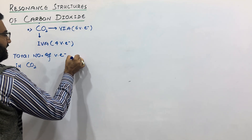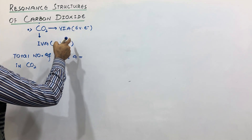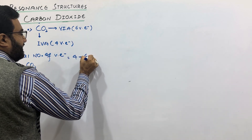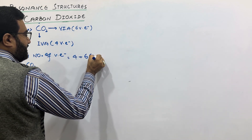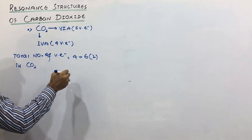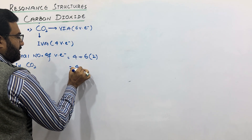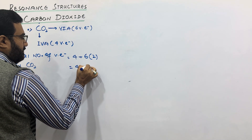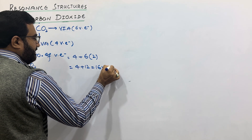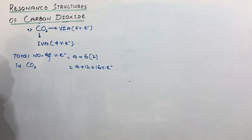Carbon has four valence electrons, plus one oxygen has six valence electrons, but there are two oxygen atoms. So four plus twelve — that will be sixteen valence electrons.